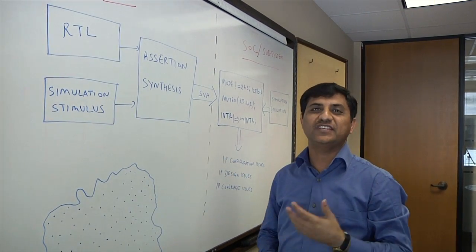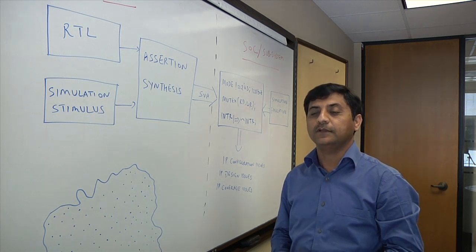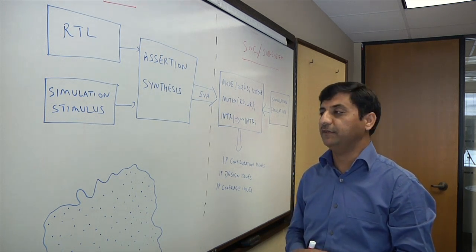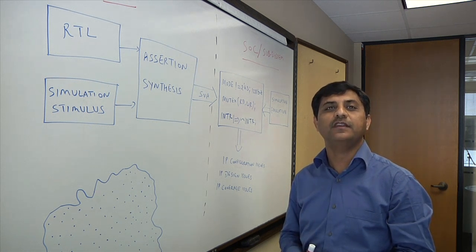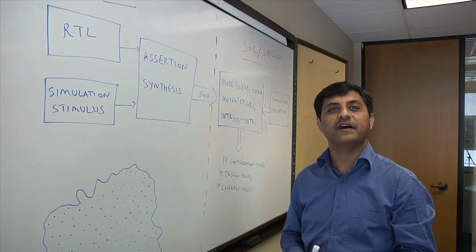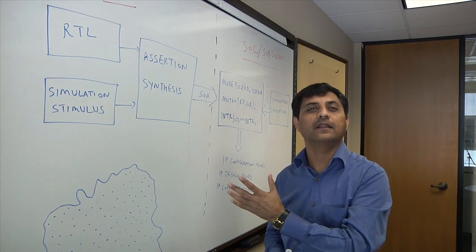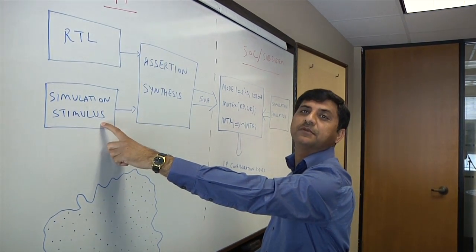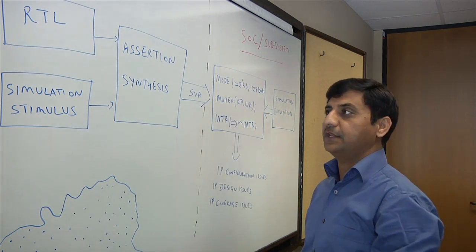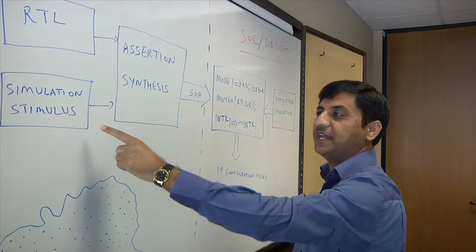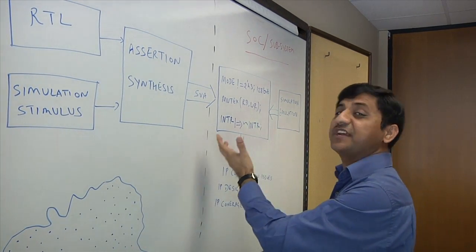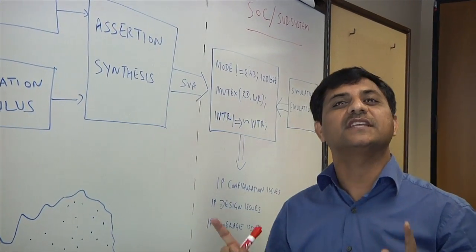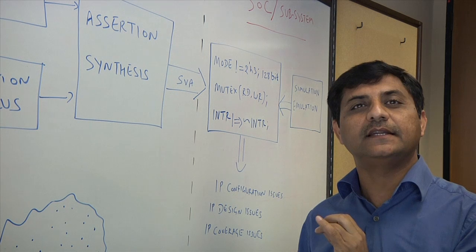So at IP level what you're trying to do is you're trying to exhaustively verify your IP or block to make sure each and every function is exhaustively verified. You can use a variety of techniques to verify your design. And these days when we talk to our customers, they have a very sophisticated UVM or VVM based verification environment. So they're not throwing as much as traffic they can on their IPs to make sure it is exhaustively verified. So here what I'm describing, you have your RTL and you have your simulation stimulus. So we have assertion synthesis technology which can combine RTL information as well as simulation stimulus information to generate properties which capture the behavior what your RTL is supposed to do and how it has been tested. So if I have to summarize it in one sentence, it is capturing RTL intent as well as your test bench intent.